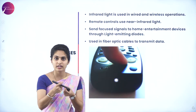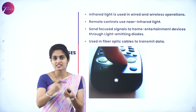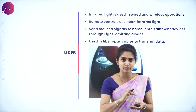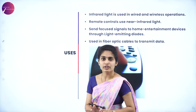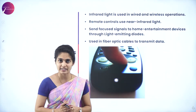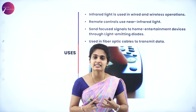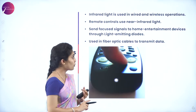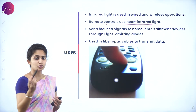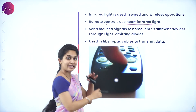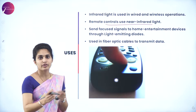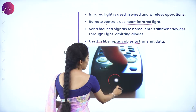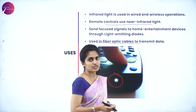We can see infrared in daily life through TV remotes. At the tip of a TV remote, there is an LED that sends infrared waves toward the television to turn it on. We cannot see these waves — they are invisible to our eyes but can be felt. Longer range infrared is sensed as heat. Infrared light is used for wireless communication, remote controls using near infrared light, home entertainment via LED, and transmitting data through fiber optic cables.